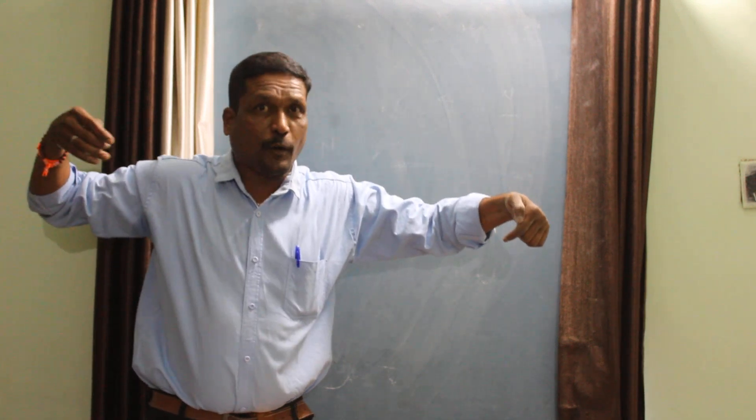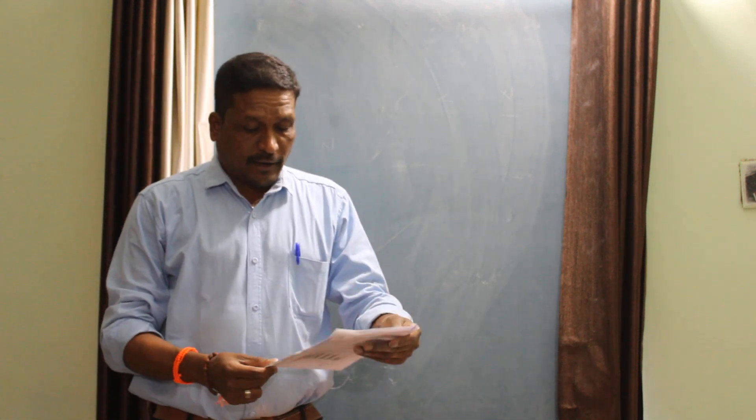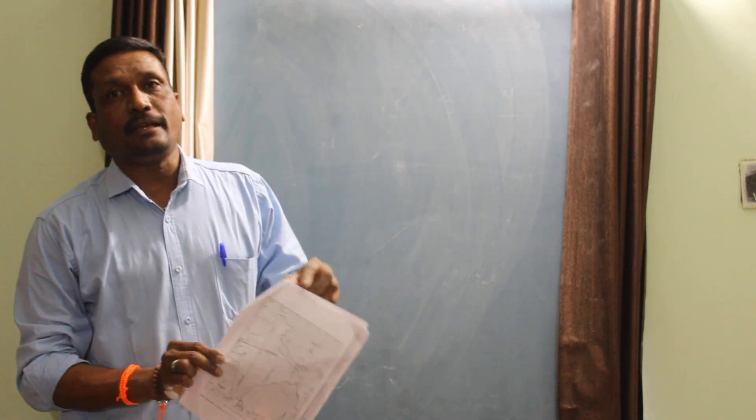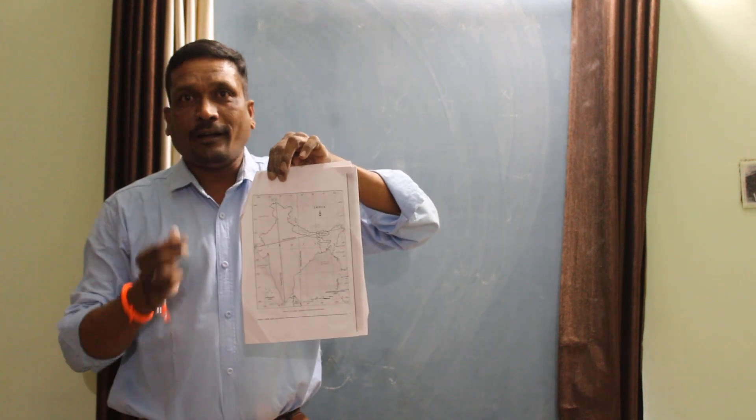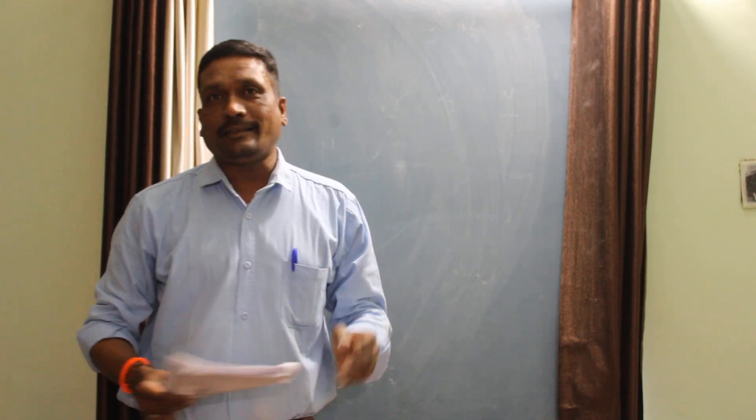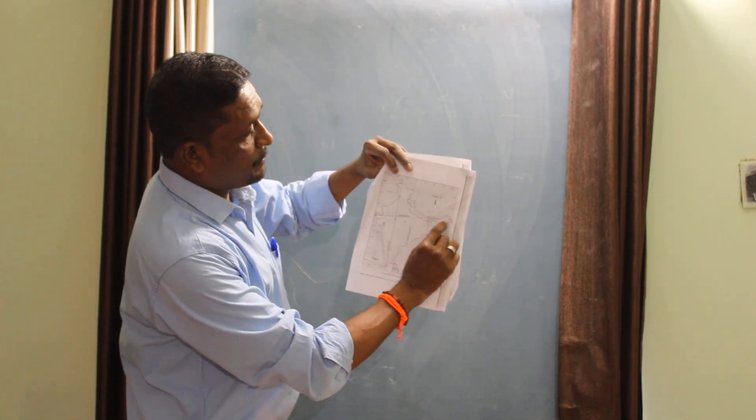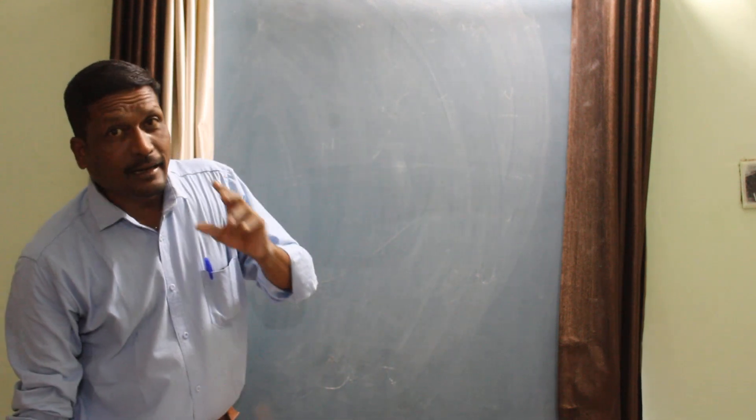Consequently, states through which Tropic of Cancer passes - you will be having a PDF file, on page number 3 the map is given and everything is given. On that only you have to see from which states the Tropic of Cancer passes from this particular area, which divides India almost into two equal parts.